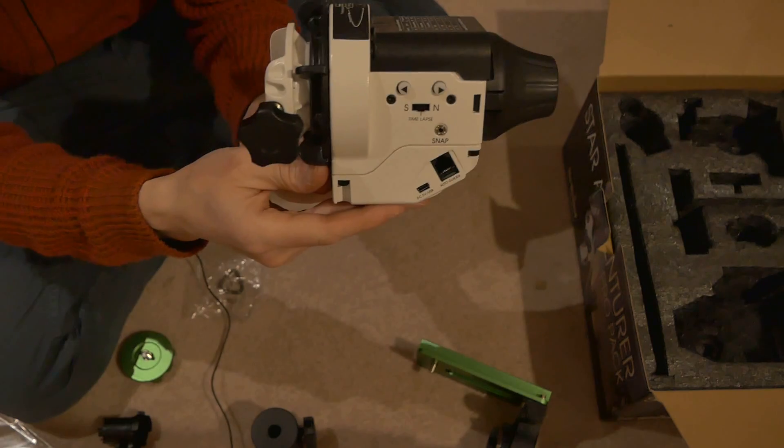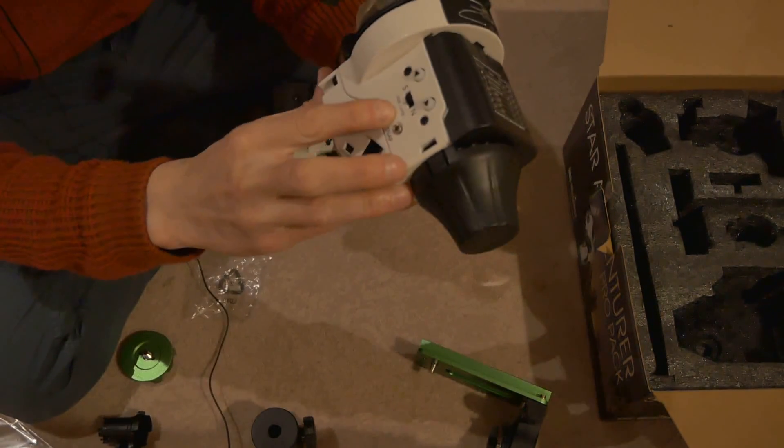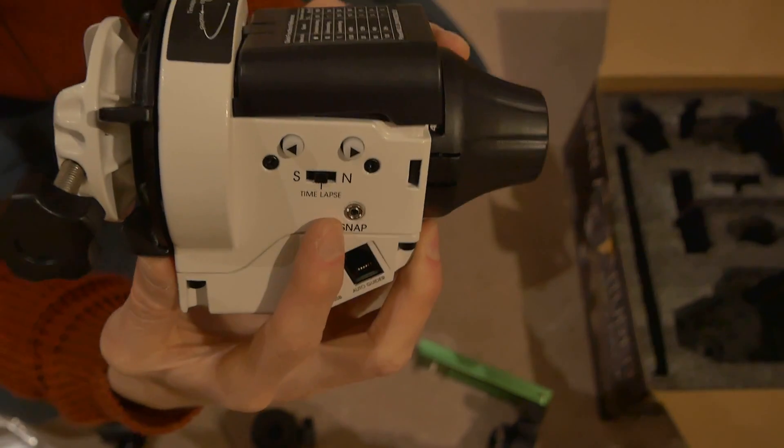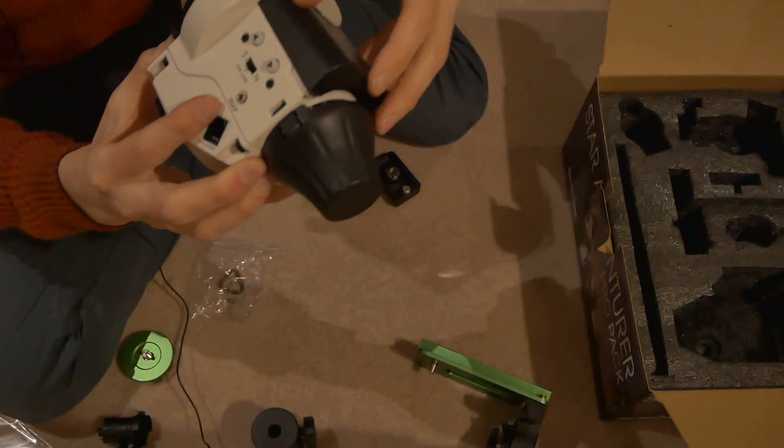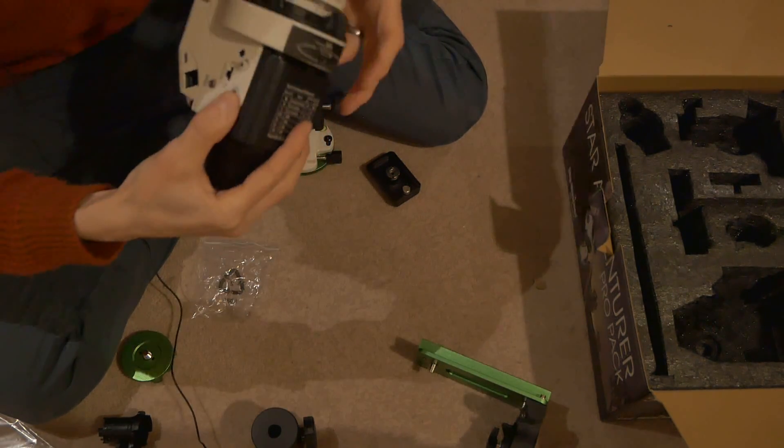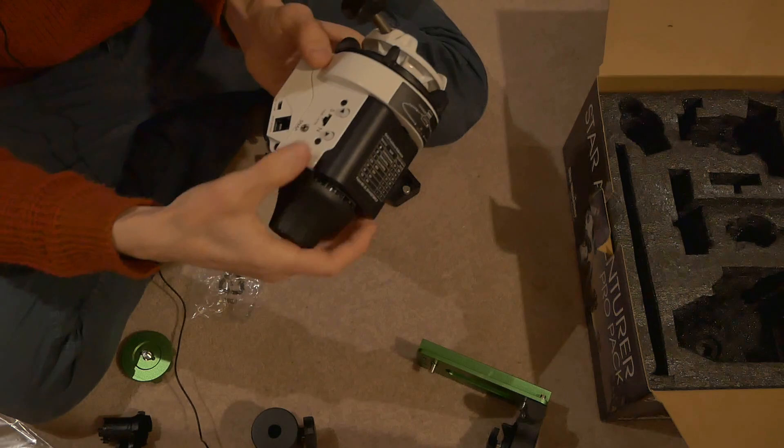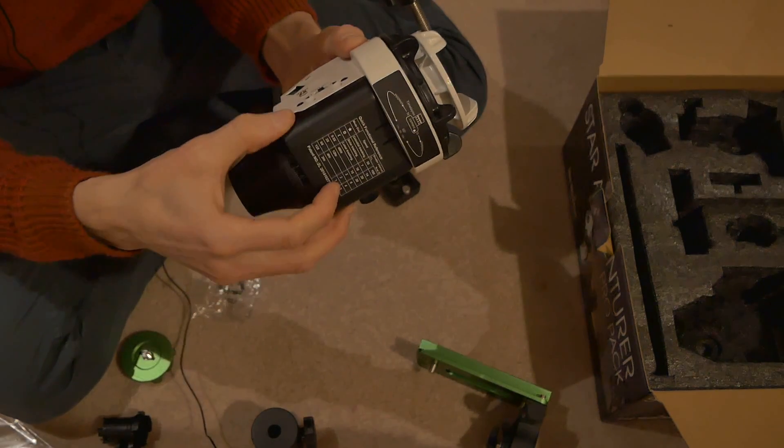On this side we've got some arrow buttons. There's a time-lapse mode in the middle of that switch there, and it's got South and North - I guess for selecting whether you're in the northern or southern hemispheres. That's falling off already - the battery cover seems to be the weak point of the mount.